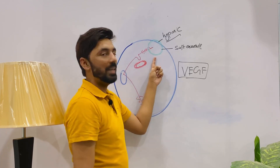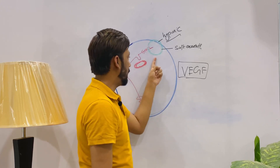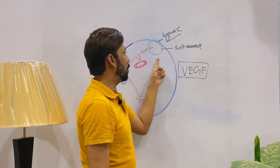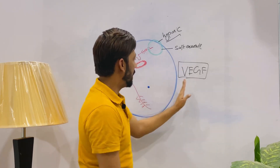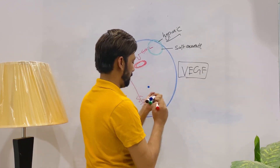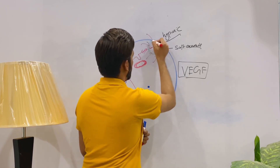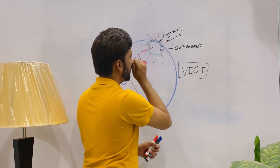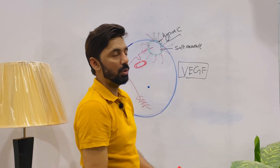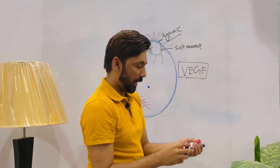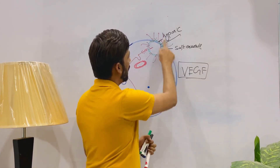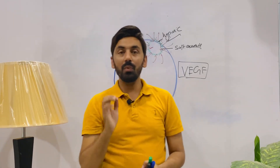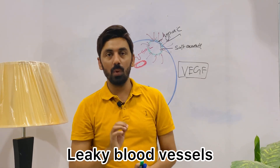Returning to our specific point where oxygen is deficient — the hypoxic patch — the vascular endothelial growth factor will come and try to compensate the oxygen supply. It will surround the hypoxic patch in an attempt to help, and it will make many new blood vessels surrounding the hypoxic patch. The problem, however, is that VEGF always produces leaky, fenestrated blood vessels.